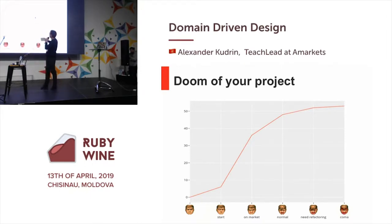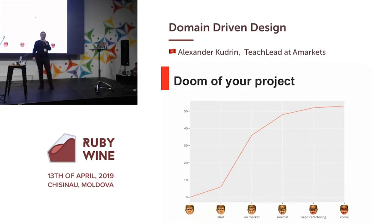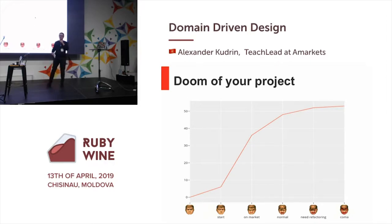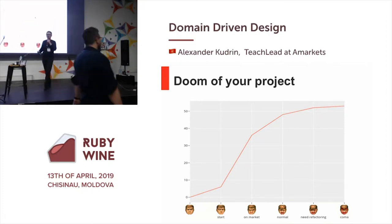The third time is when you stop building your product — it's the time when you start living with it. The next part is the best time when you need to start any refactoring of your product. But we didn't. And the last stage I call 'coma' — the coma of your product — when a typical one-hour task can take one week or more.